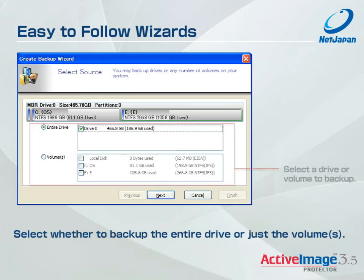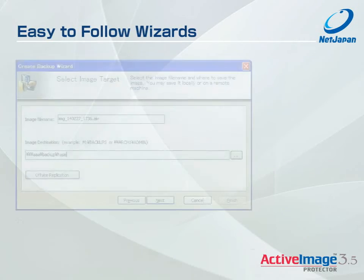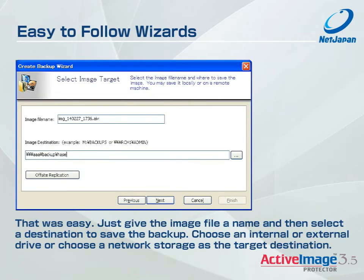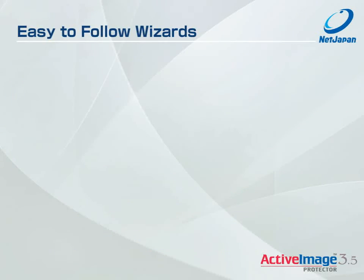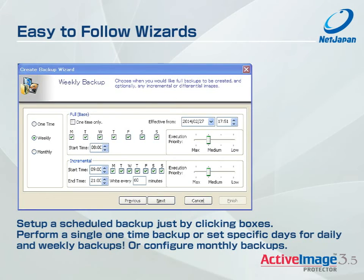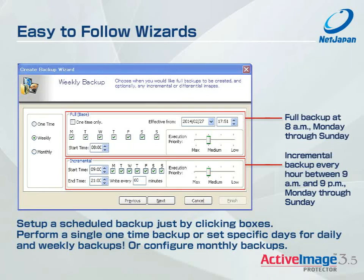Now select whether to backup the entire drive or just the volumes. Just give the image file a name and then select a destination to save the backup. Choose an internal or external drive or choose a network storage as the target destination. Set up a scheduled backup just by clicking boxes. Perform a single one-time backup or set specific days for daily and weekly backups, or just configure a monthly backup.